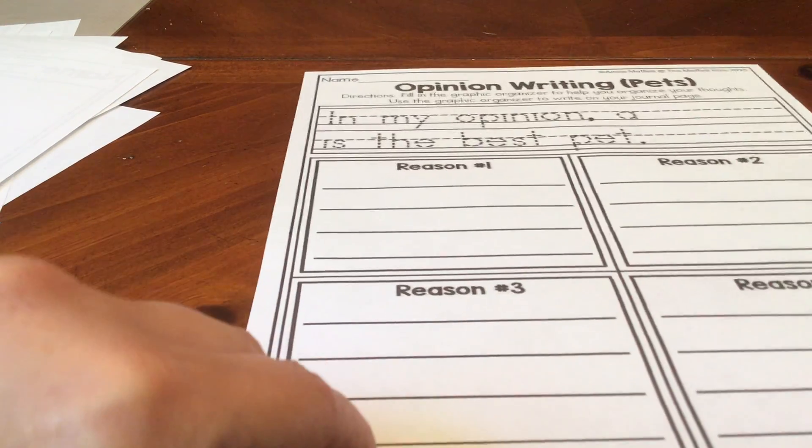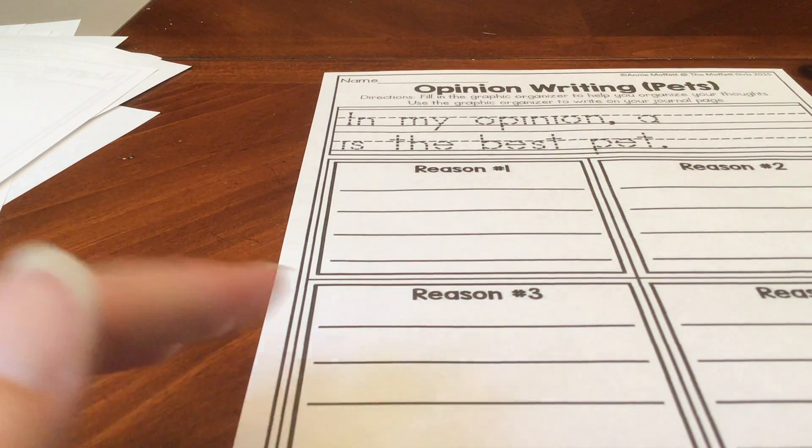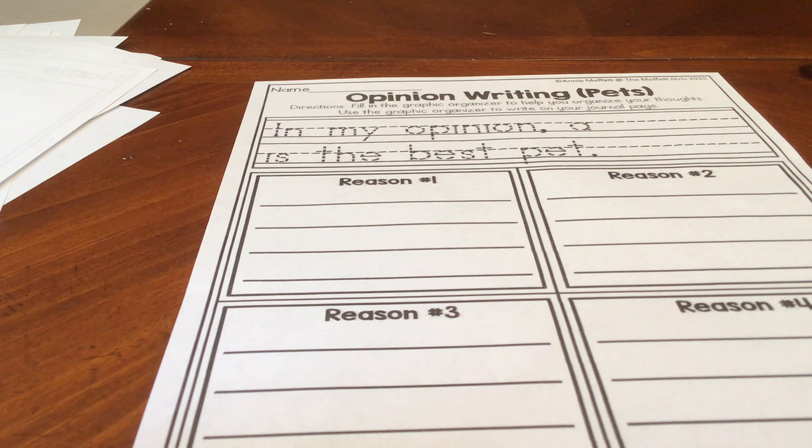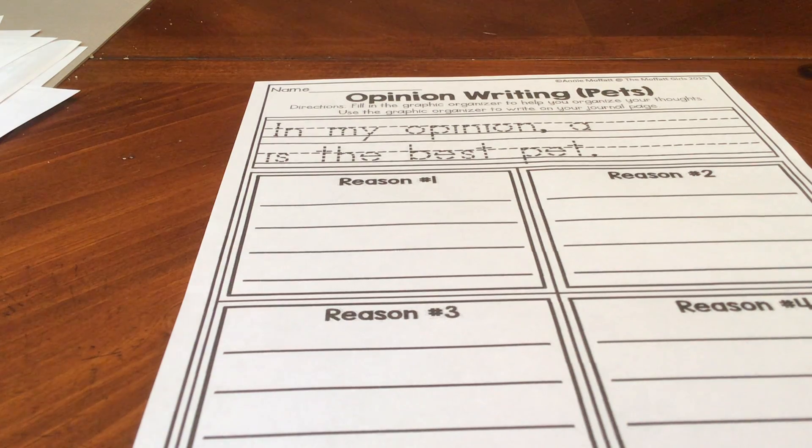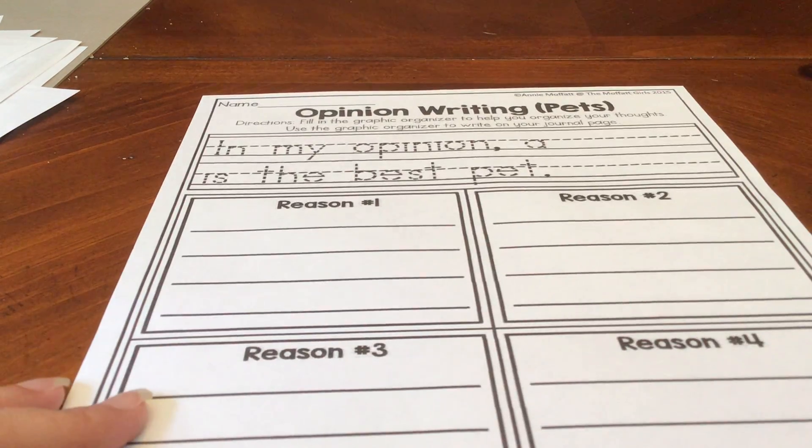And our last page for today is different. We have not done one like this. This is a writing. And you're giving me your opinion. Opinion means how you feel about something. It cannot be right or wrong. Your opinion might not match somebody else's. And you could both be right because your opinion is your own. The first thing you need to do is trace the writing that's on the page.